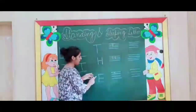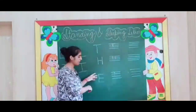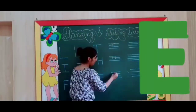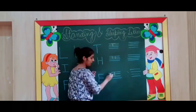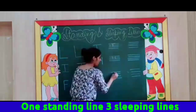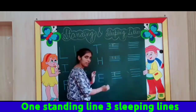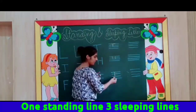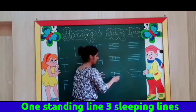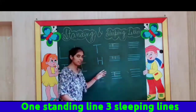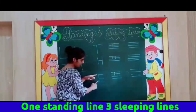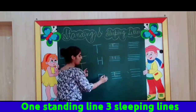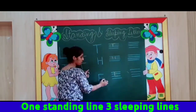So let's make letter E with one standing line, one sleeping line, second sleeping line, and third sleeping line. This is letter E — with one standing line and three sleeping lines: one, two, three.